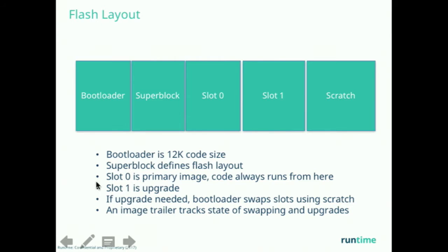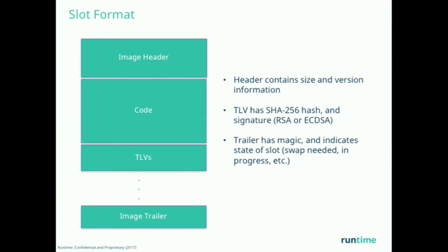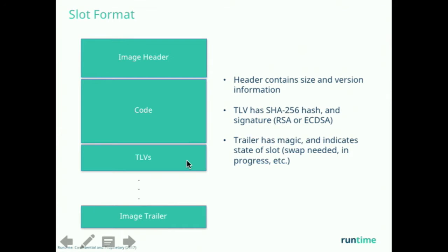The bootloader supports either RSA or ECC DSA for signatures on images. The image format consists of an image header containing size and version information, with optional padding so interrupt vectors can be located at a specific position in text. Then there's the kernel code, followed by TLVs that include the cryptographic signature of the image data. The image trailer keeps an ongoing record of how the swap progresses between slot zero and slot one.